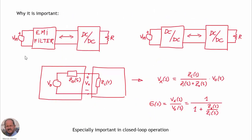Starting with the introduction: why is it important to know the input impedance of a DC-DC converter? The reason is that usually DC-DC converters don't operate in stand-alone mode. They usually have an EMI filter at the input, or we can have two DC-DC converters operating in cascade, so we can have some interaction between both blocks.